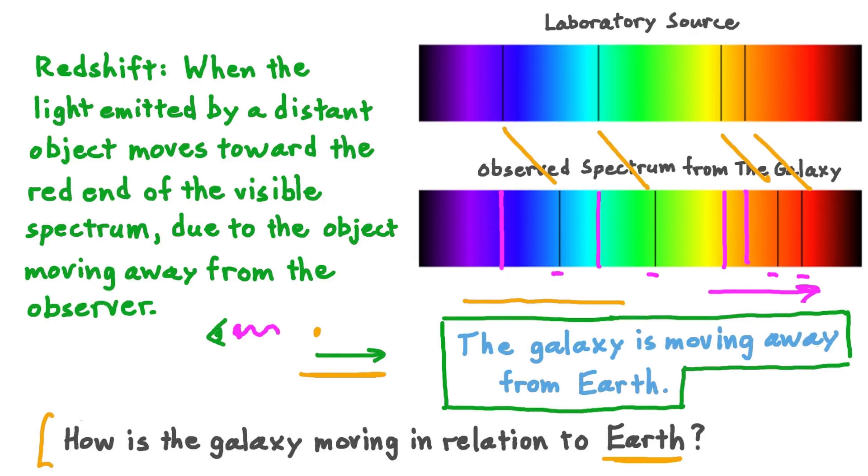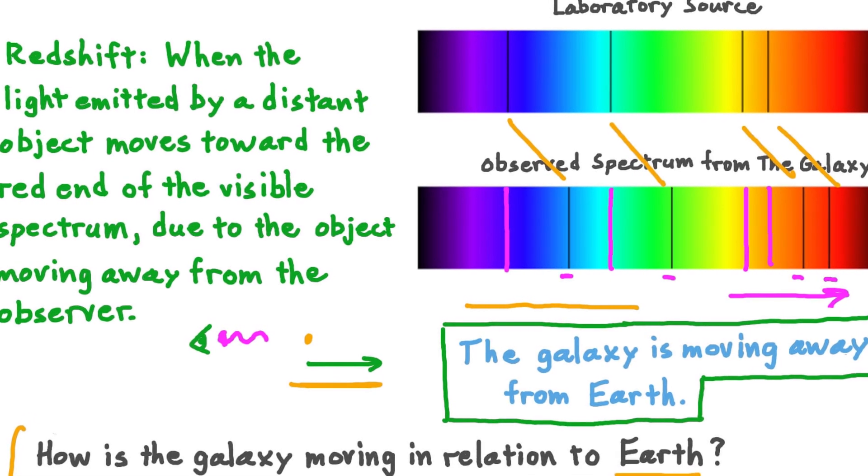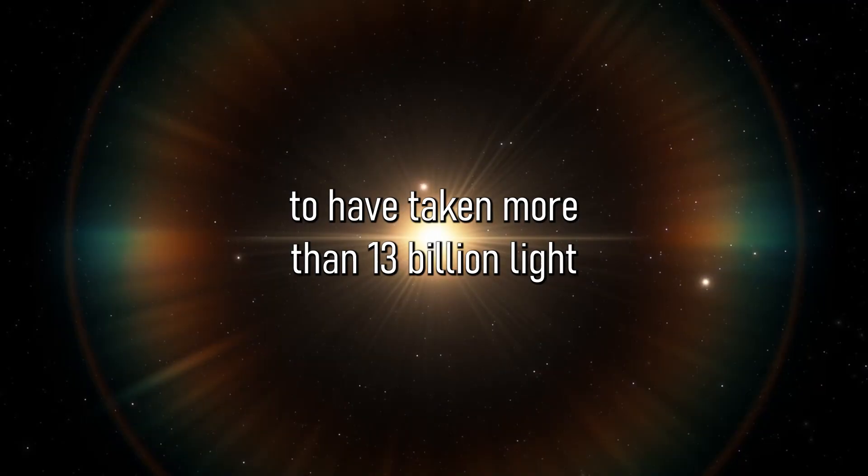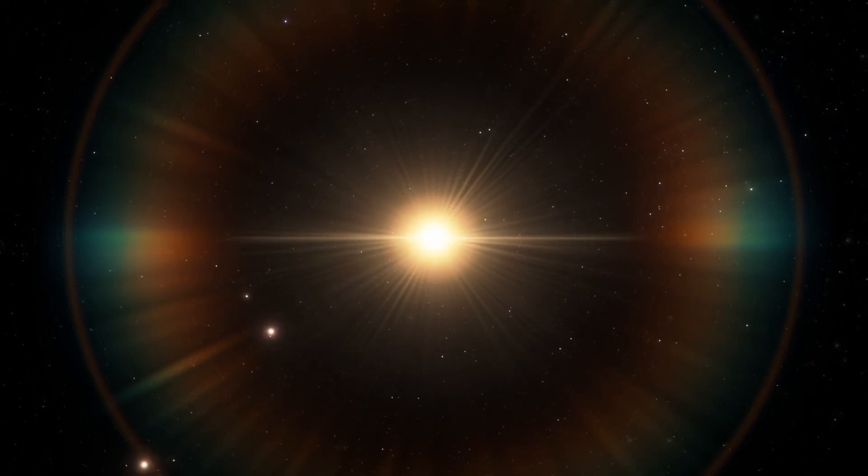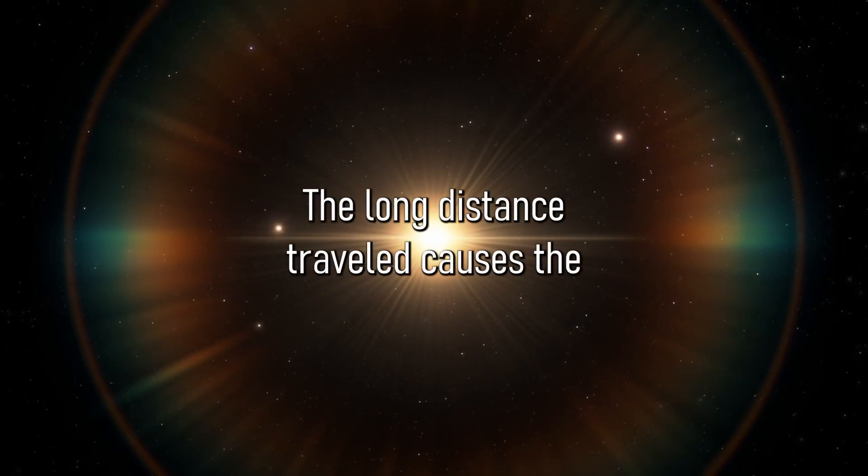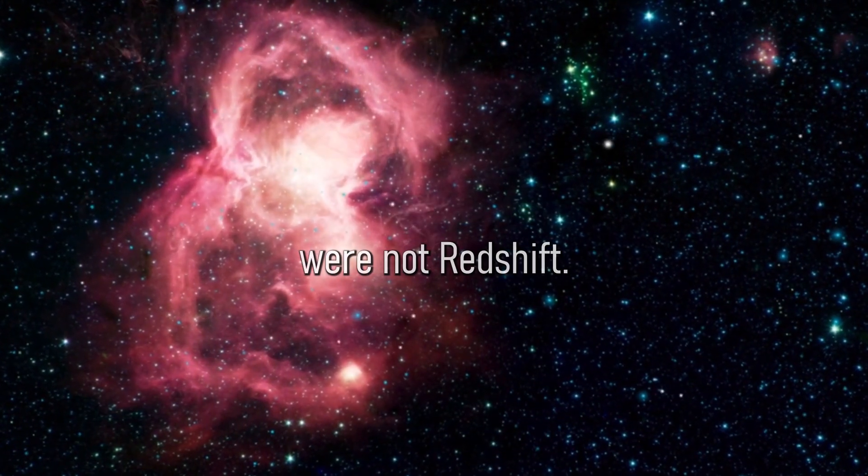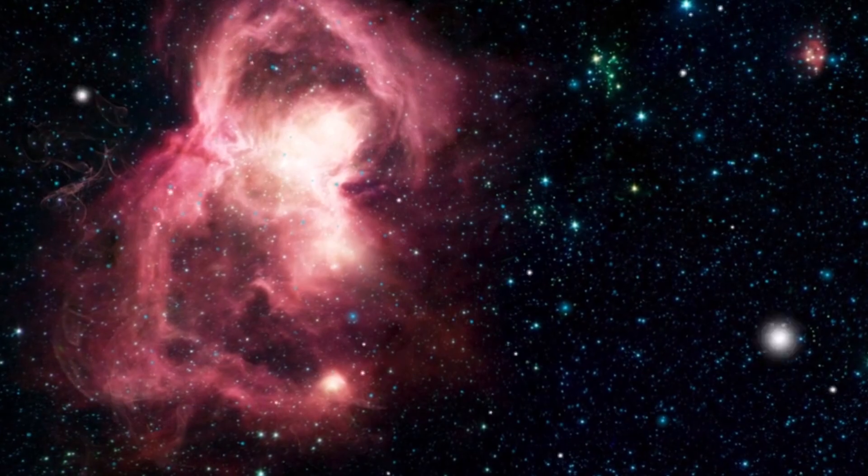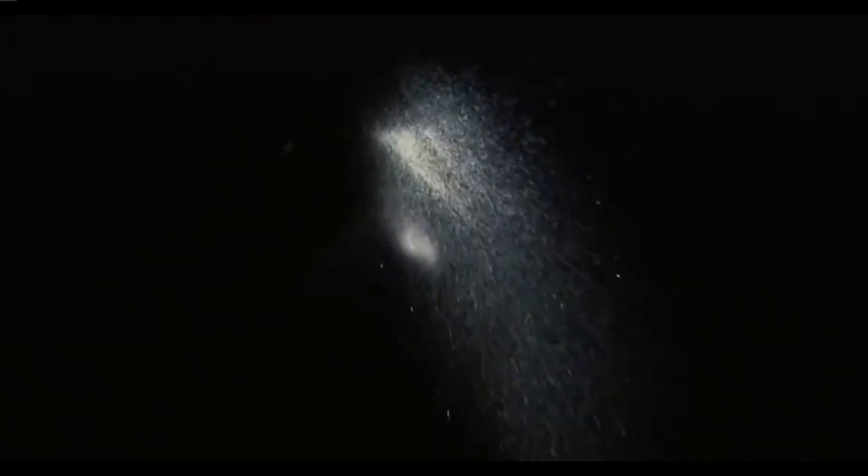Redshift is a phenomenon that occurs when light from a distant object is stretched out by the expansion of the universe. The light from this black hole is estimated to have taken more than 13 billion light years to reach us, presenting what we can now observe. The long distance traveled causes the light to appear redder than it would if it were not redshifted. The redshifted light is then analyzed to provide us with information about the amazing activities that happen so deep in space.